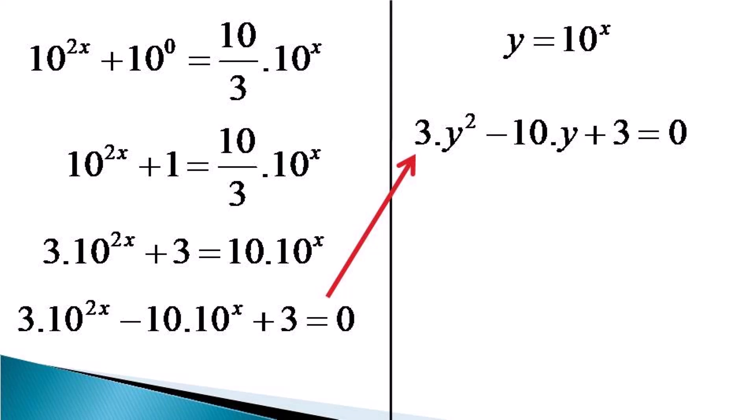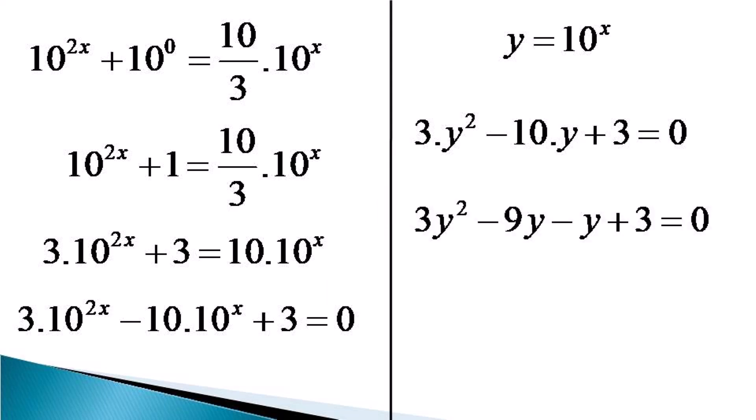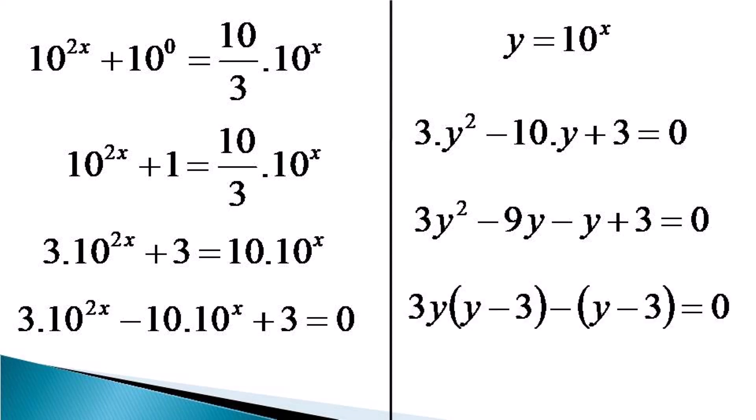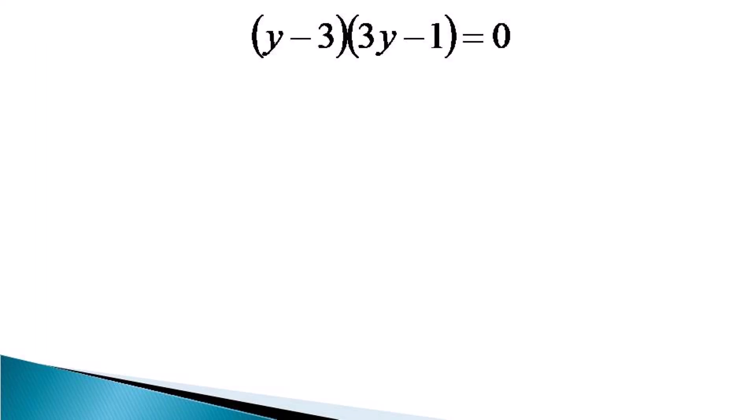Factorizing this, we get 3y into y minus 3 minus y minus 3 is equal to 0, and the factors are y minus 3 into 3y minus 1 is equal to 0.